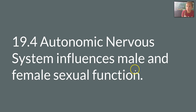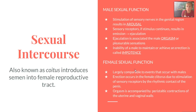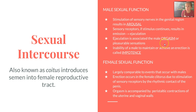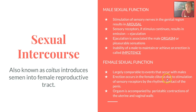Section 19-4 talks about how the autonomic nervous system influences male and female sexual function. Sexual intercourse, also known as coitus, introduces semen into the female reproductive tract. For males, stimulation of sensory nerves in the region results in arousal; if stimulus continues, it results in emission and then ejaculation, which is associated with the male orgasm. The inability of a male to maintain or achieve an erection is called impotence. Female sexual function is largely comparable and also controlled by the ANS — erection occurs in the female clitoris, and orgasm is accompanied by peristaltic contractions of the uterine and vaginal walls.